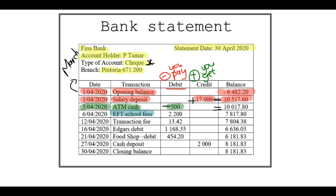There is a transaction fee of 13.42 Rand — this is what you pay to the bank for all the transactions like EFTs and cash withdrawals, because the bank also has to get an income. So they use transaction fees.